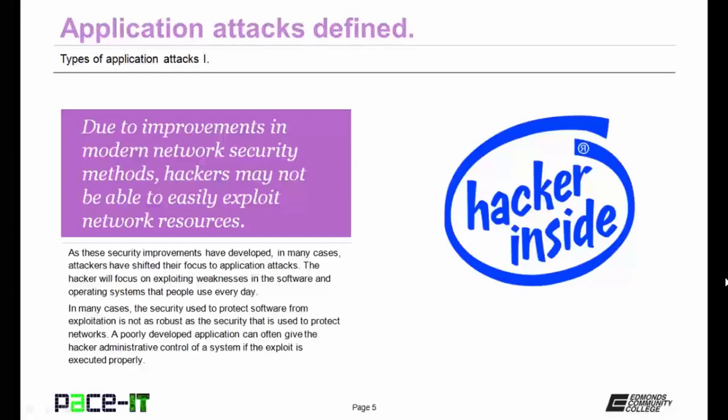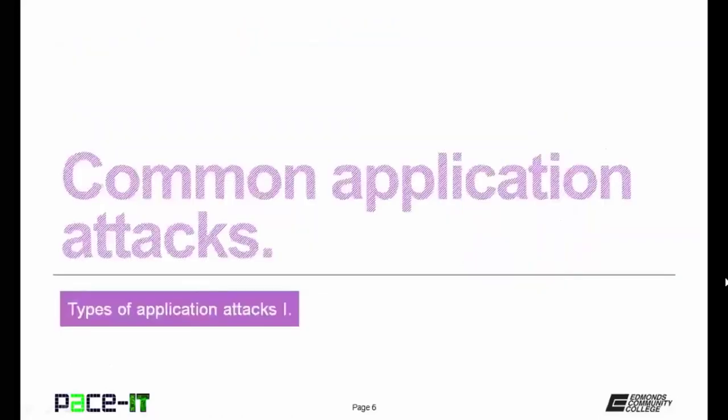In many cases, the security used to protect software from exploitation is not as robust as the security used to protect networks. A poorly developed application can often give the hacker administrative control of a system if the exploit is executed properly. And that briefly defines an application attack. Let's move on to the discussion about common application attacks.